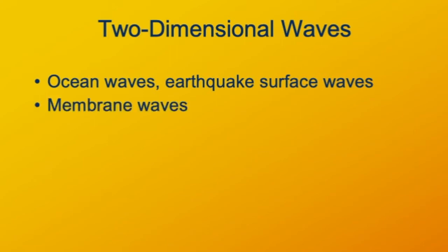Waves on a membrane also are two-dimensional waves. You can imagine if you have a stretched membrane and you disturb it in some section, you strike it in some section, then the waves will spread out from the point of disturbance, just like the waves will spread out from a rock thrown into a pond.